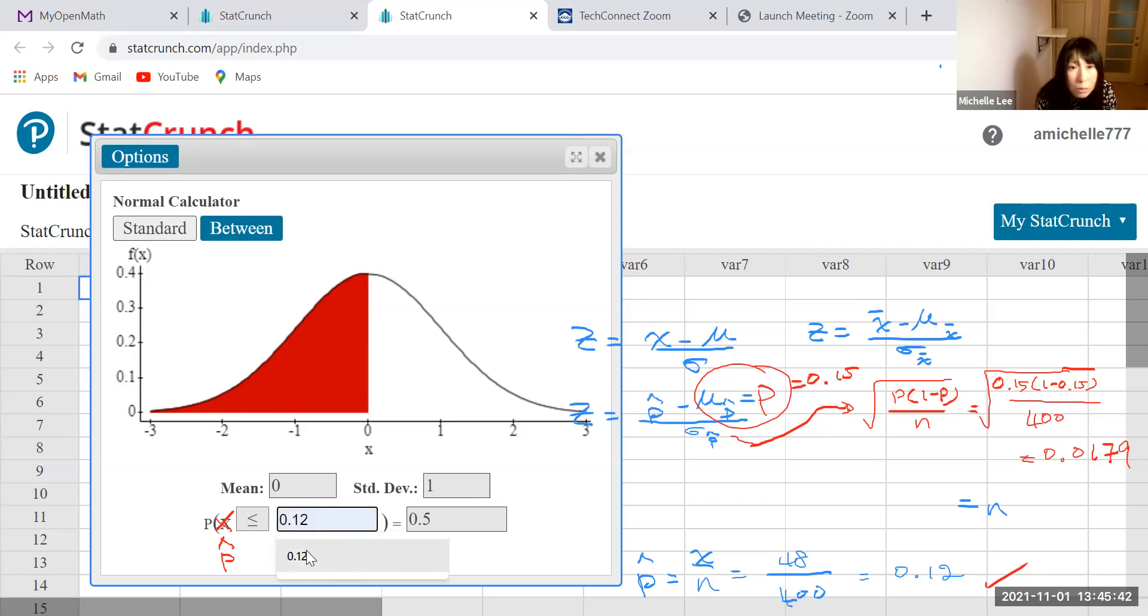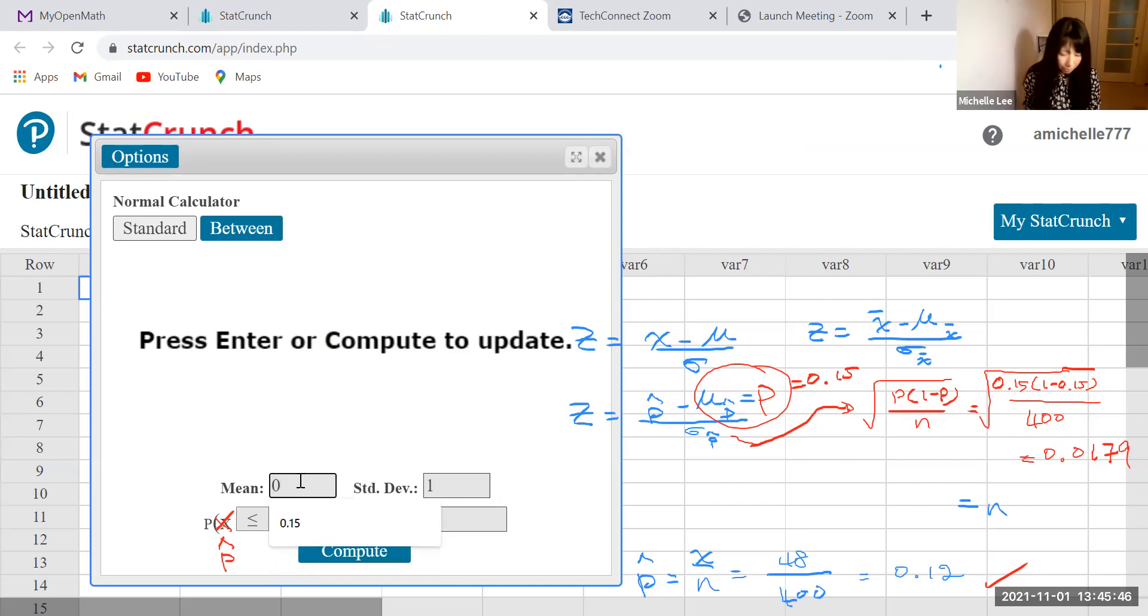Before I forget, 0.12, click this one. There we go. 0.12. Mean, which is mu sub p hat. So mu sub p hat, which is p, which is 0.15. Now, standard deviation, which is the sigma p hat in this case. So sigma p hat, we were using this here, which is 0.0179. There we go. 0.0179.